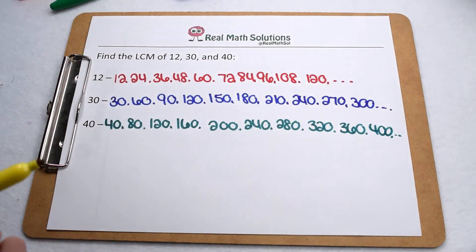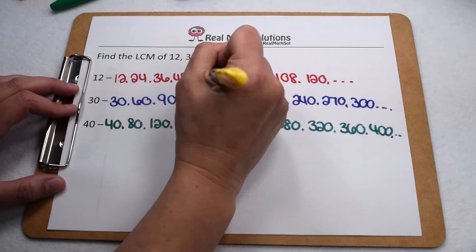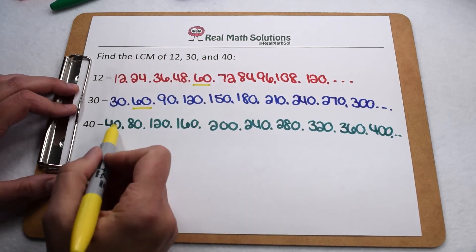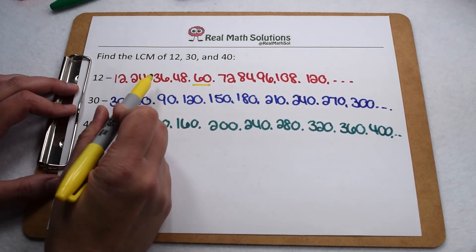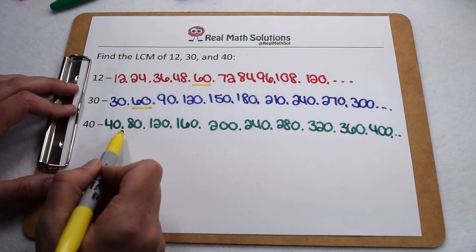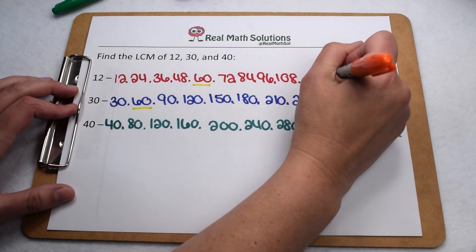From here, we can start looking at ones they have in common. Well, if we go down our list of 12, we can see that 60 appears on our list of 12 and 30, but it doesn't appear on our list for 40. So it's not going to be the least common multiple of 12, 30, and 40 since it doesn't appear on all three lists. If we keep going, we come to 120.